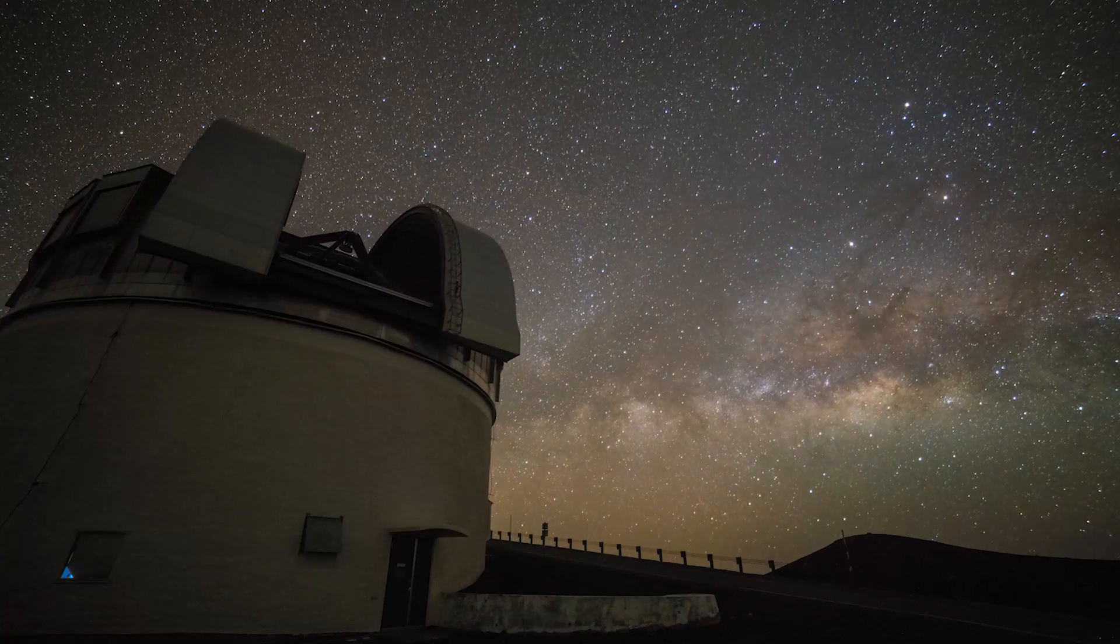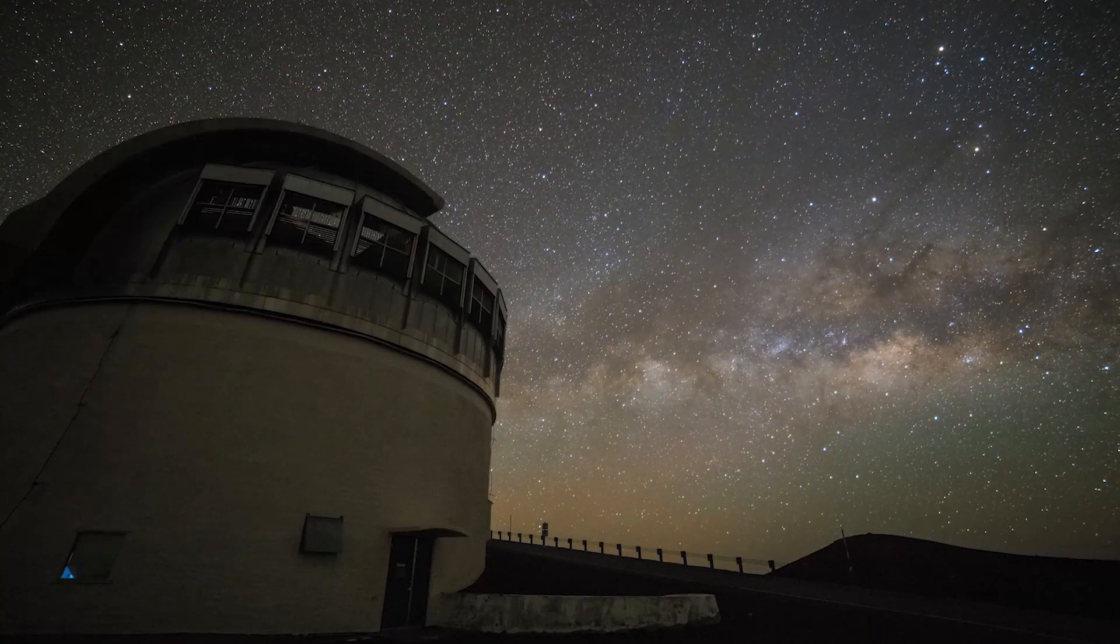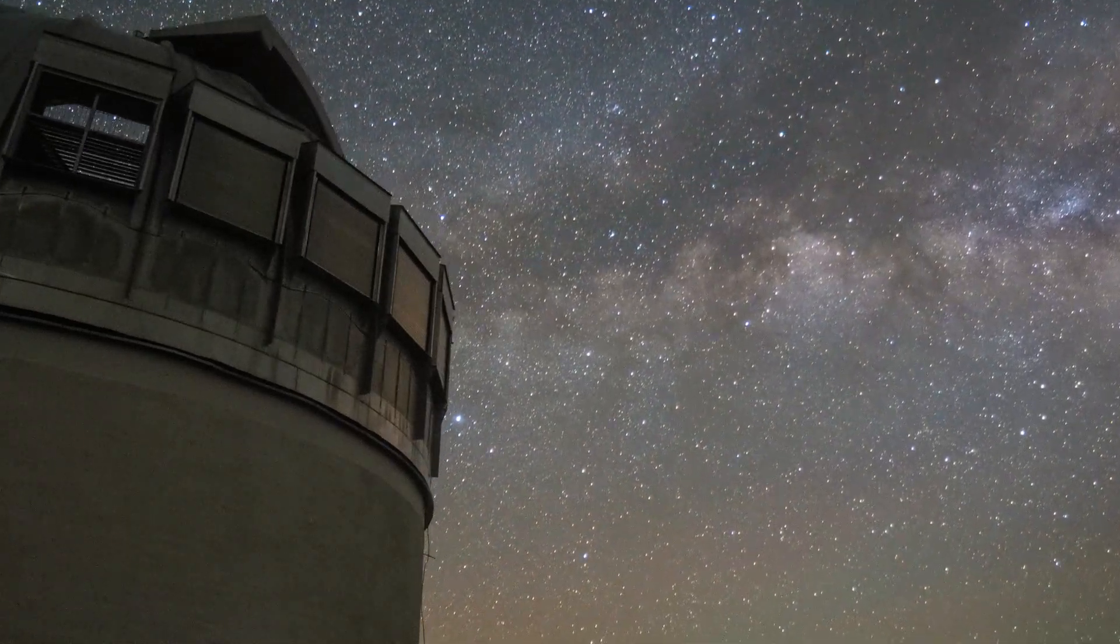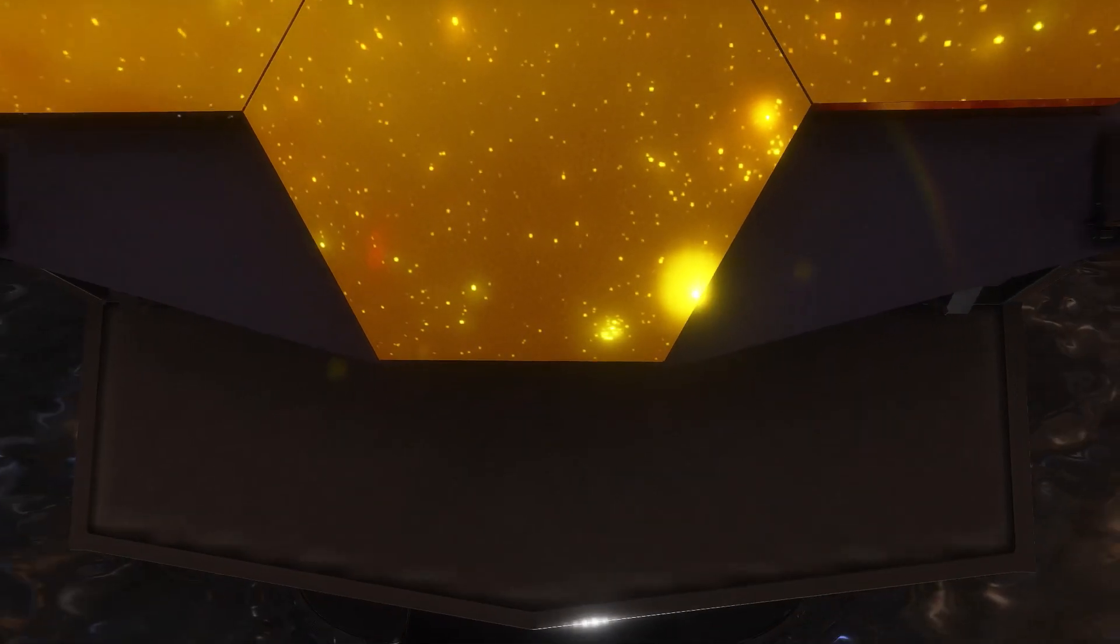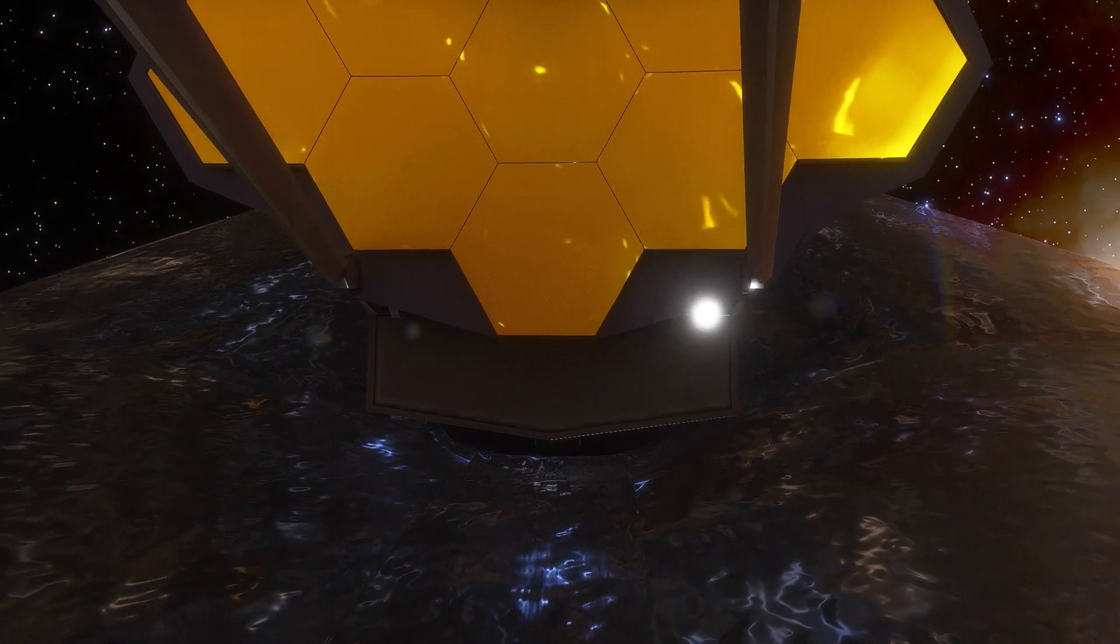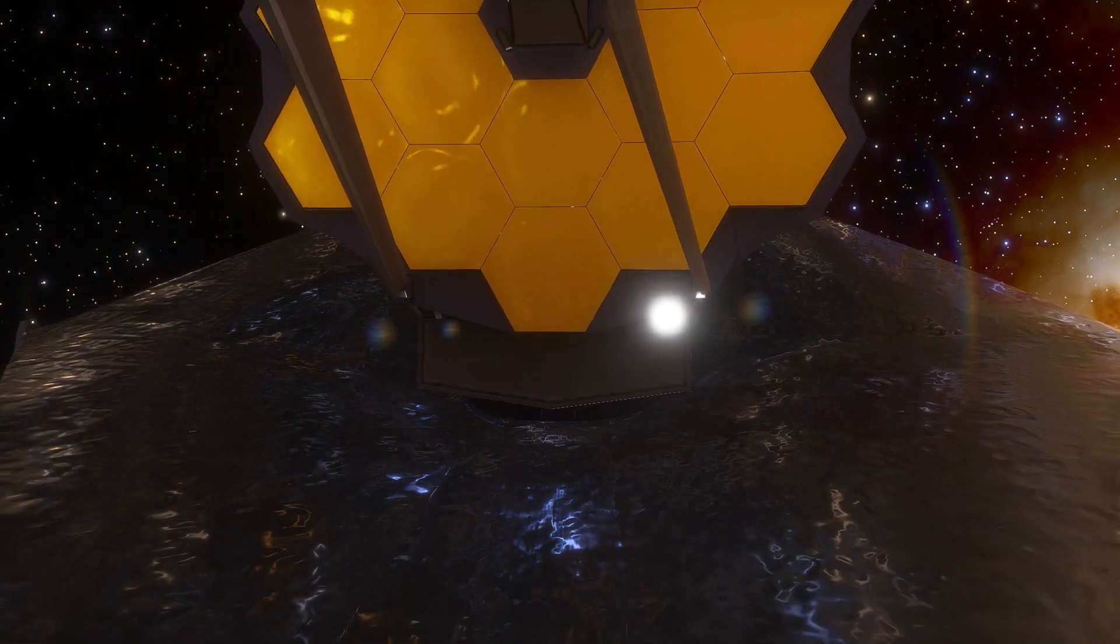To detect life on distant exoplanets, astronomers will look for biosignatures, byproducts of biology that are detectable in a planet's atmosphere. NASA's James Webb Space Telescope was designed before astronomers had discovered exoplanets, so the telescope is not optimized for exoplanet research.